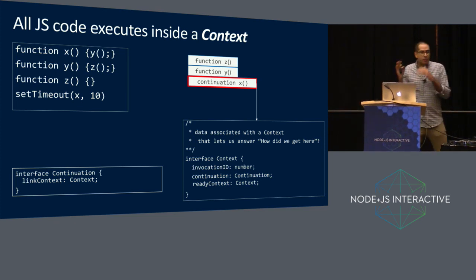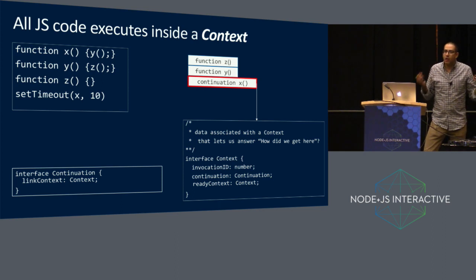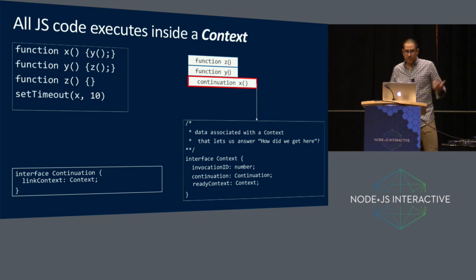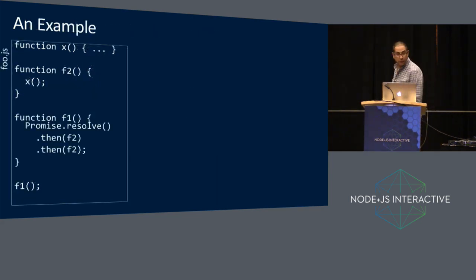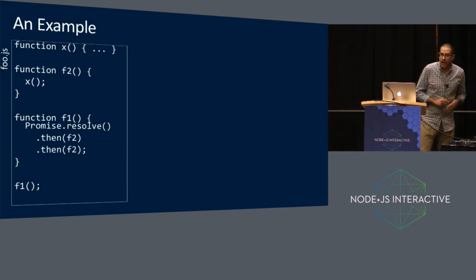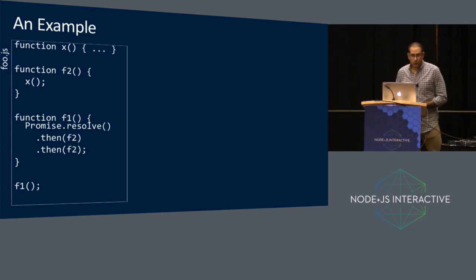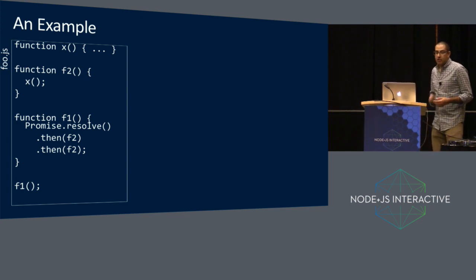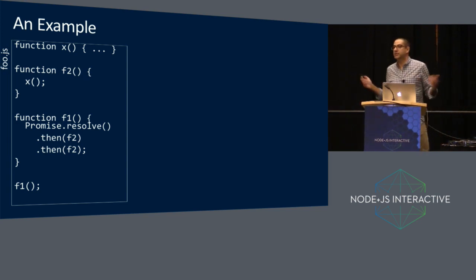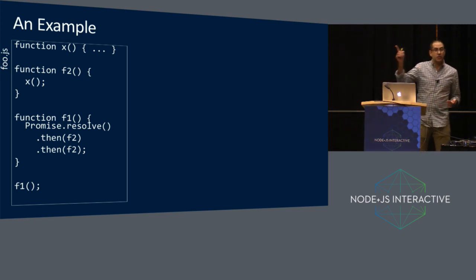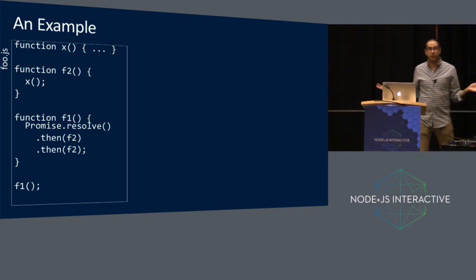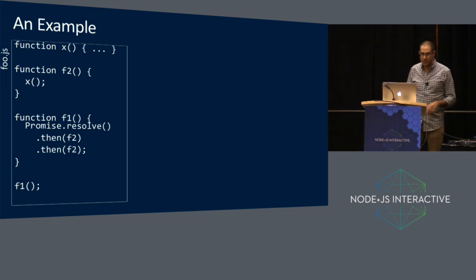Given all of this data, we can then traverse wherever we are. We can always ask: how did I get here? And you can traverse either the ready context edge or the link context edge. We'll walk through an example. We've got foo.js — some file, loaded by a module loader. There's function X which does nothing, F2 calls X, F1 calls promise.resolve.then.then passing in F2 twice. F2 is a single continuation — it's going to be invoked two times, creating two unique invocations, two unique contexts. And this thing loads and calls F1 to kick this off.